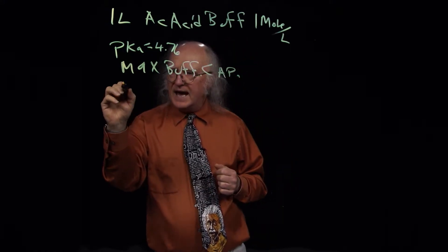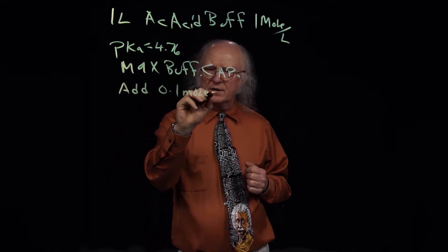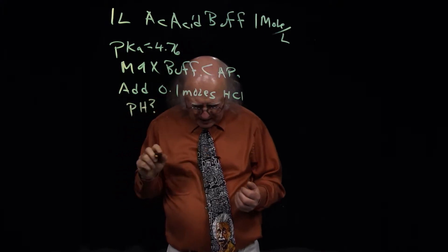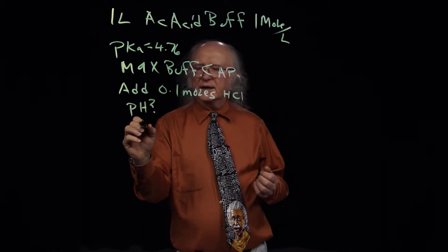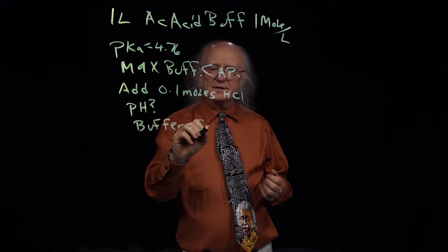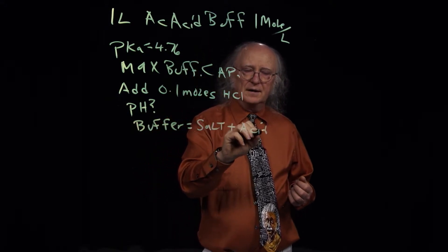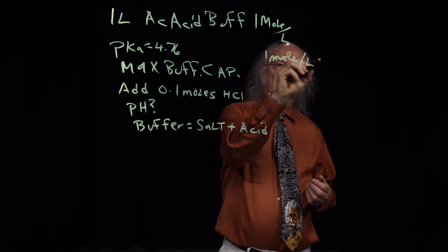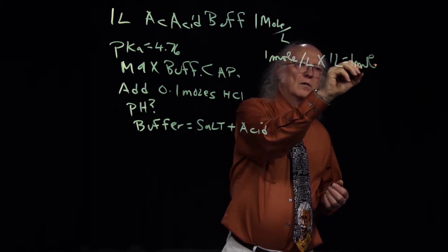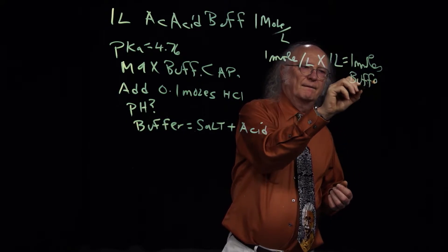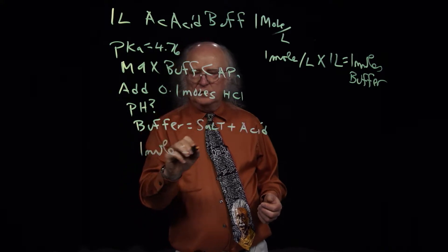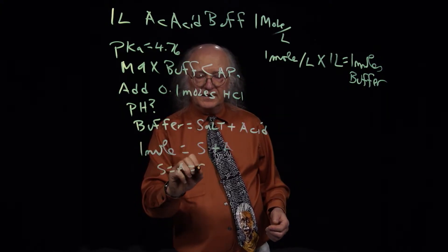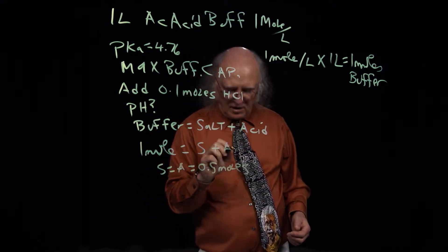After adding 0.1 moles of HCl with no volume change, what is the pH? The buffer equals salt plus acid. I had 1 mole per liter times 1 liter, so 1 mole of buffer total. That means 1 mole equals salt plus acid, and since salt equals acid, I have salt equals acid equals 0.5 moles of each.